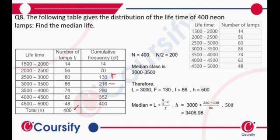This will be capital F, then 186 will be small f. This is our median class. So 3000 will be l and h is 500. Put it in the formula: median equals l plus n by 2 minus capital F, divided by small f, times h.